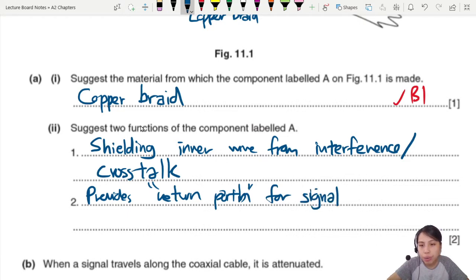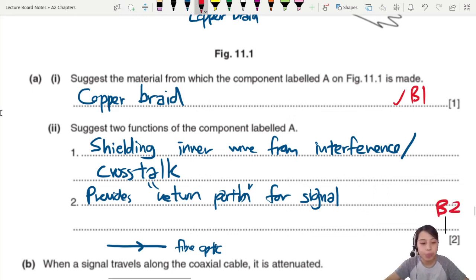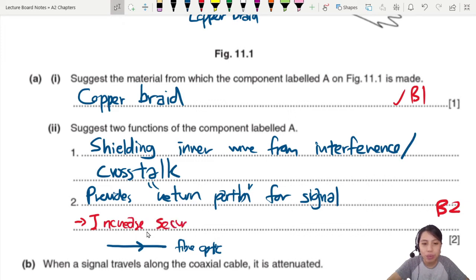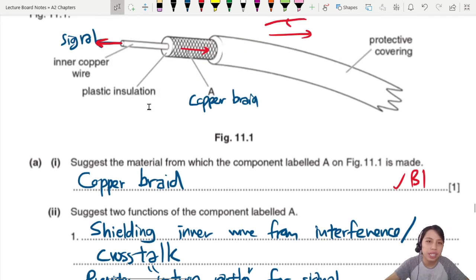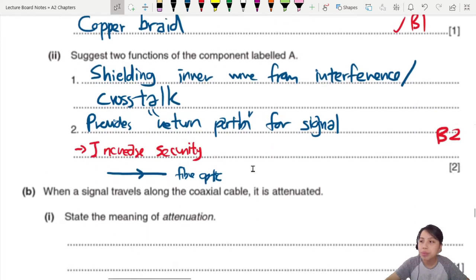The one that is truly only one way, just signal can only travel in one way, is the fiber optic. The light only can go that way. Moving on. Oh, forgot to mark this one. B2. You got any two ideas correct? That's just B2. There's one more that you can also add on. Increased security. Not so easy to listen to the info that is being sent compared to wire pairs. So increased security.